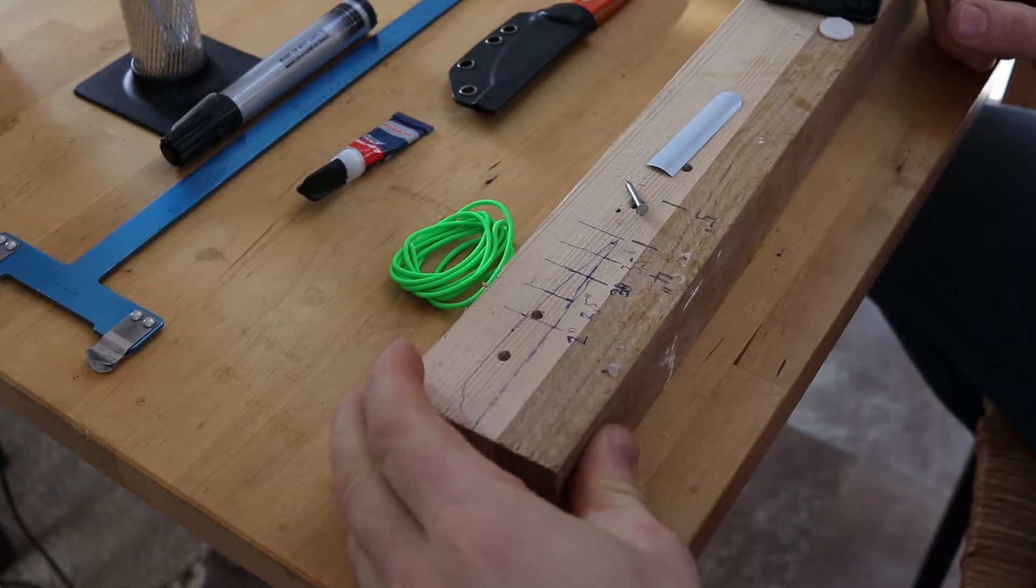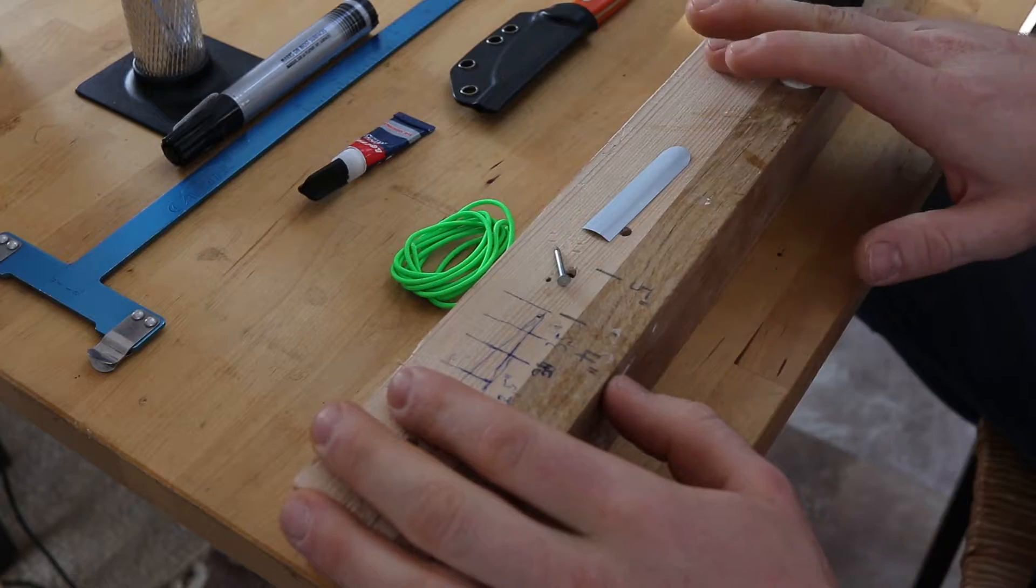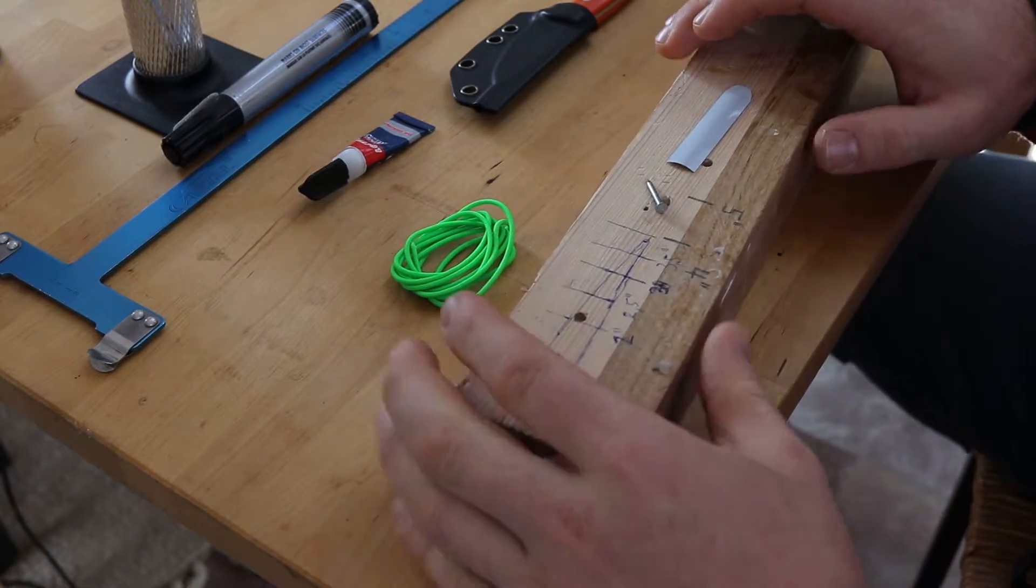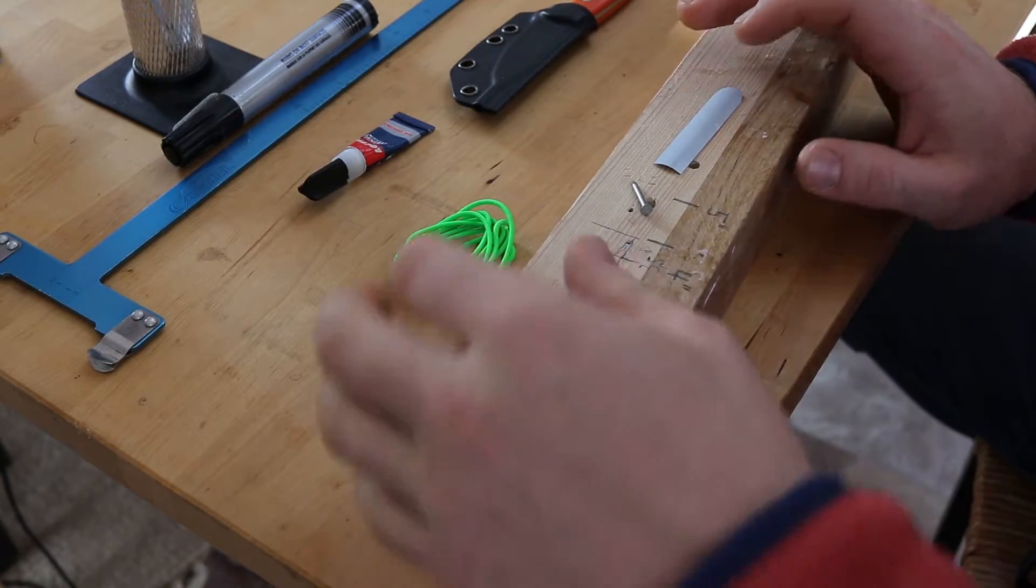All right folks, this is just a very quick update. As you can see I just got my block here with the fletching jig. Here's a quick update to the clicker, how I mounted it before.